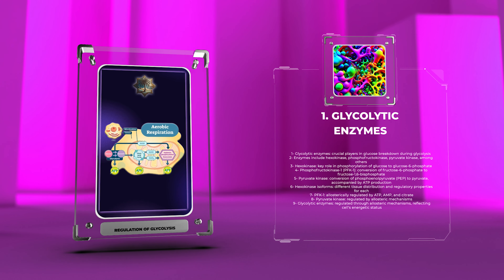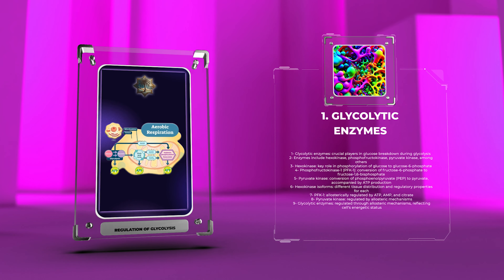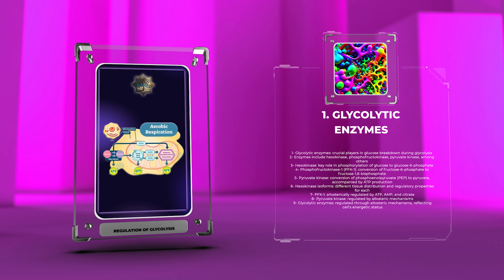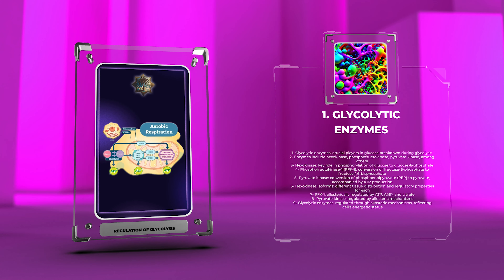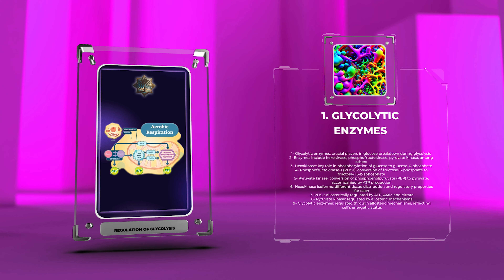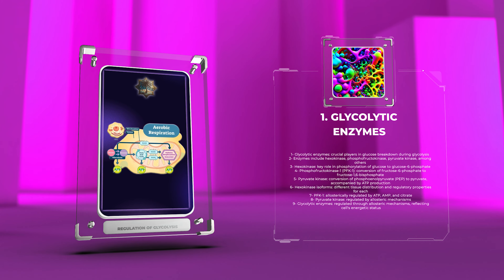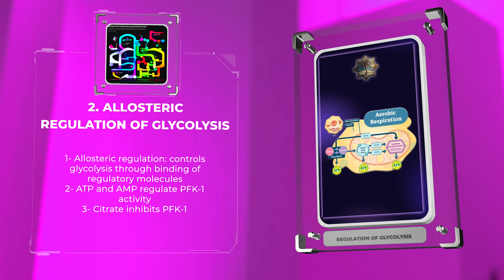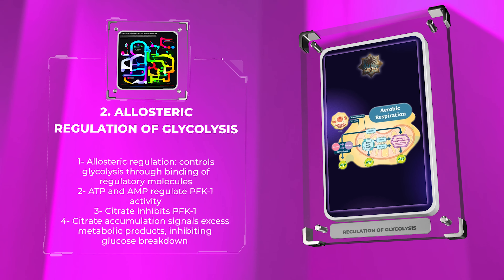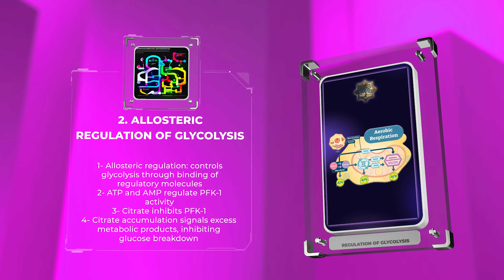Lastly, pyruvate kinase serves as the final glycolytic enzyme, catalyzing the conversion of phosphoenolpyruvate to pyruvate, accompanied by ATP production. This reaction is also regulated through allosteric mechanisms, reflecting the cell's energetic status. Allosteric regulation plays a pivotal role in controlling glycolysis, involving the binding of regulatory molecules to specific sites on the enzymes, modulating their activity.